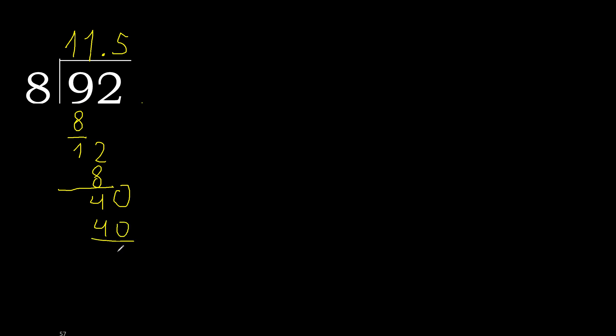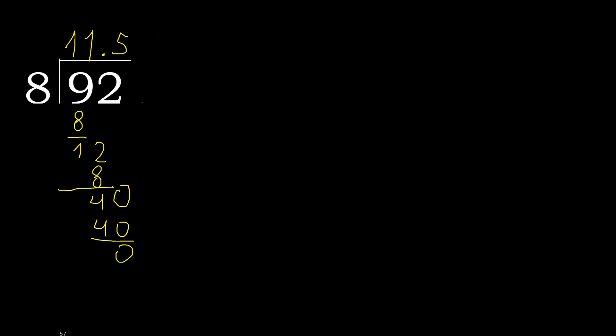40 minus 40 is 0. Finish. 92 divided by 8 is done here.